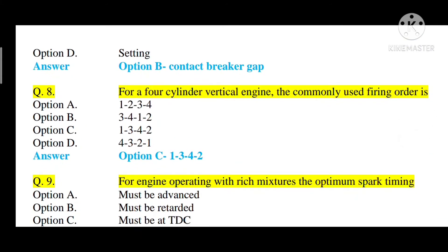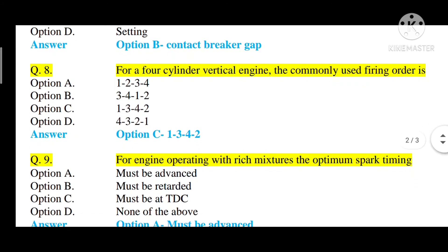Question number eight: for a four-cylinder vertical engine, the commonly used firing order is — option A: 1-2-3-4, option B: 3-4-1-2, option C: 1-3-4-2, option D: 4-3-2-1. The correct answer is option C — 1-3-4-2 is the firing order used for a four-cylinder vertical engine.